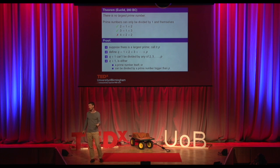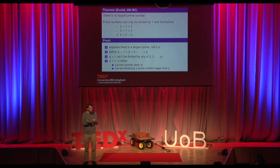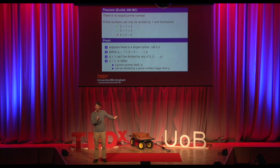So Q plus one can't be evenly divided by any number between two and P. This leaves us with one of two possibilities. Either Q plus one itself is a prime number and can't be expressed as the product of smaller prime numbers — in which case we've contradicted our initial assumption that P is the largest prime number, because Q is larger than it. The second possibility is that Q plus one isn't a prime number, in which case it can be expressed as the product of smaller prime numbers. But because none of those are between two and P, there has to be a larger prime number than P. You're smiling — good. So that's the proof. That's Euclid's proof.